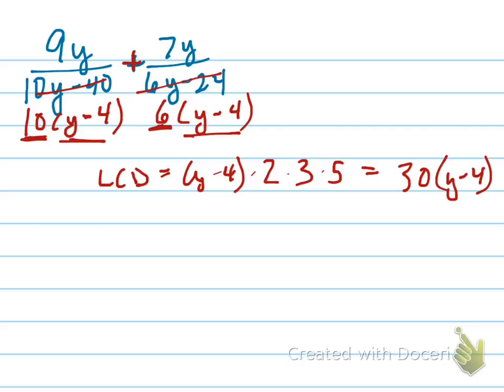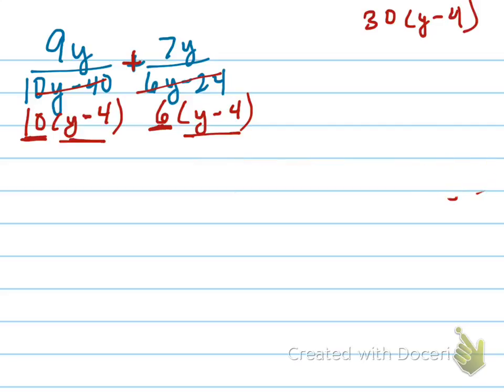That to me is the easiest way to do it. So 30 times y minus 4, let me write that up here. 30 times y minus 4, and now let me erase this, because I'm going to need the room.